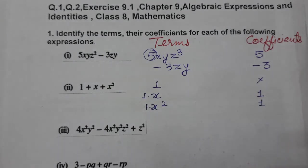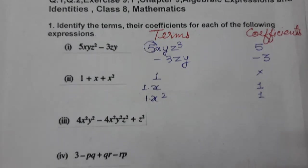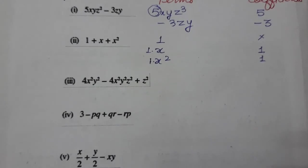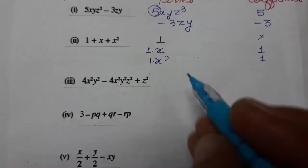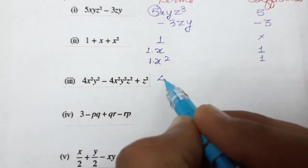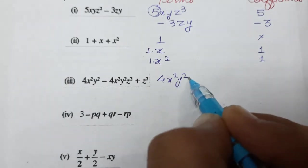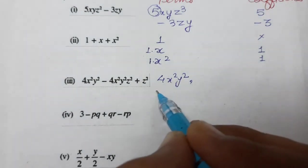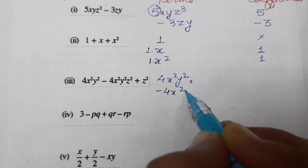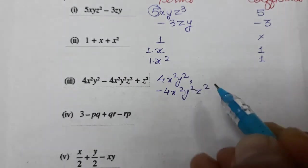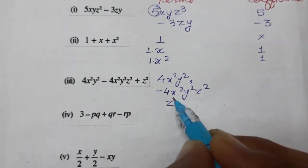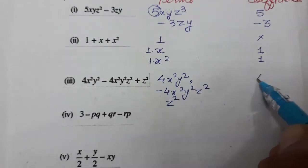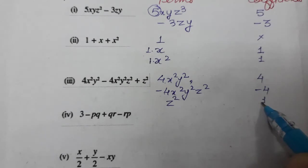Now comes the third one. So what are the terms? First of all, write terms: 4x²y², this is the first one. Then second one is -4x²y²z². And the third one is z². So what are the coefficients? 4, then -4. And nothing means 1 is there.